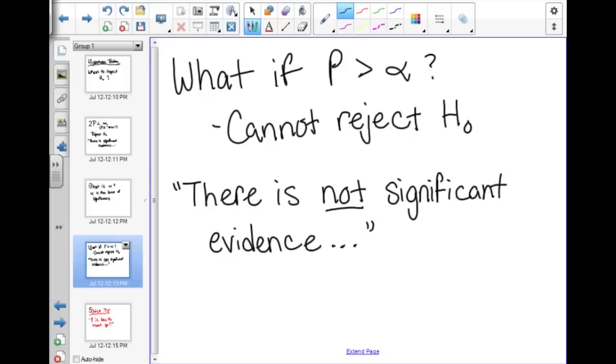So what if P is greater than alpha? Then you cannot reject H₀. But we don't say that we're accepting HA, we're just saying you cannot reject H₀. So in your answer you will begin it, there is not significant evidence.